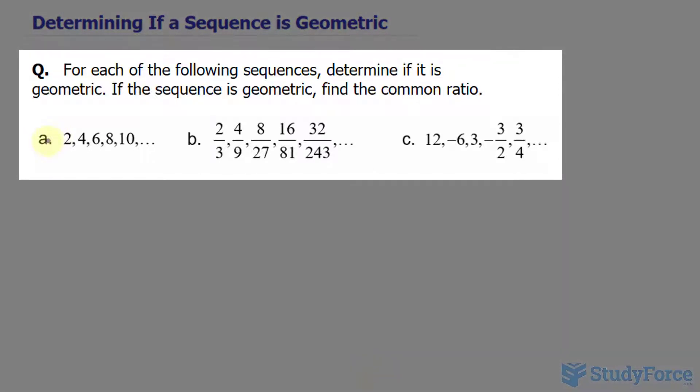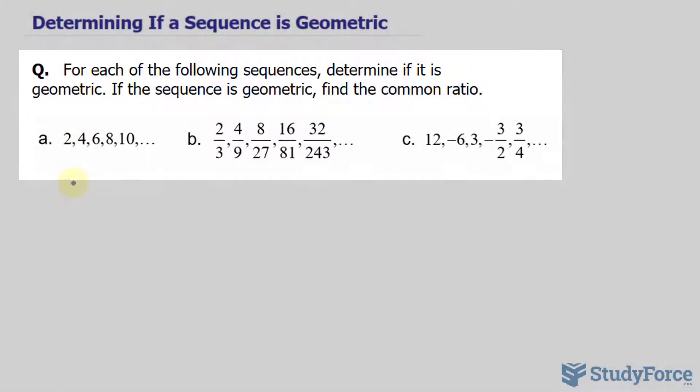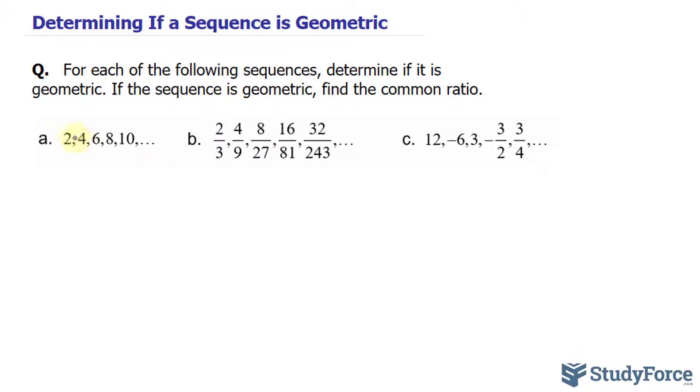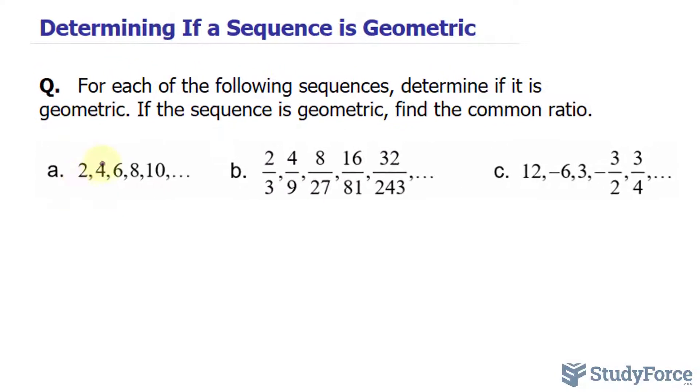Take for example the sequence of numbers found in this group. It goes from 2, 4, 6, 8, 10. If we can find a number that's multiplied from 2 to 4 and that same number when multiplied to 4 gives you 6, then it is considered geometric.